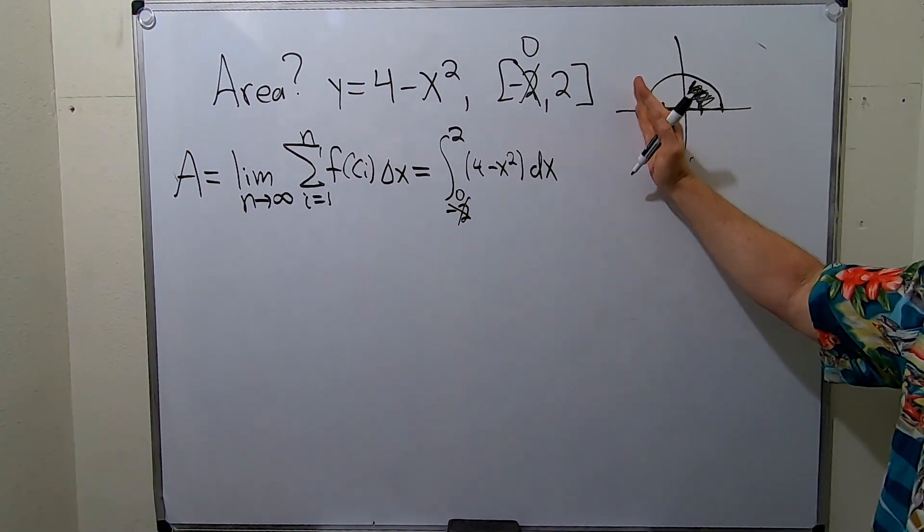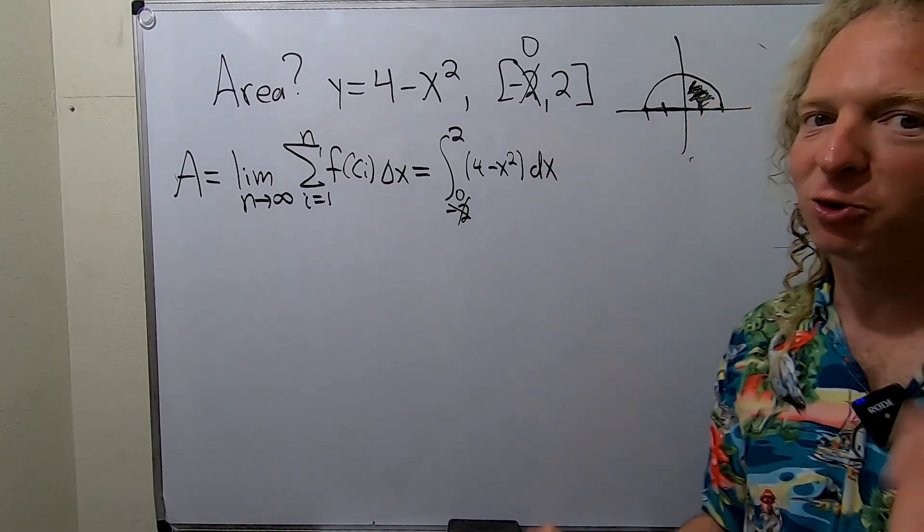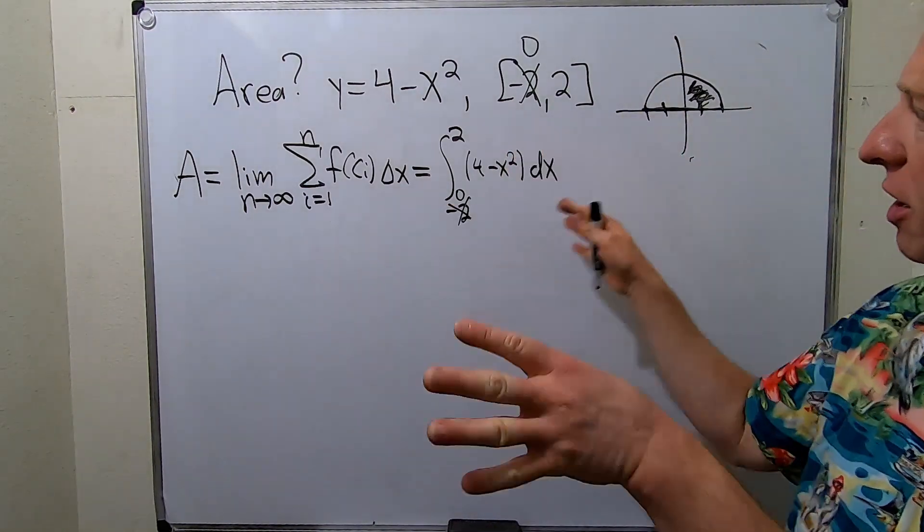Again we're trying to find the area of this entire piece so we're just going to find this area and then multiply the answer by 2. Okay so let's go ahead and work it out.